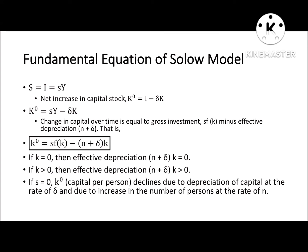Population and capital stock: just like the population grows at a certain percent, capital stock per capita will decline. The depreciation of capital stock at the rate of delta will also be declining the capital stock annually. Capital stock will be affected by two things: the population growth rate and the depreciation rate. If the economy is not saving — if the saving rate is zero — then the economy is not saving, and with the passage of time, capital will depreciate.